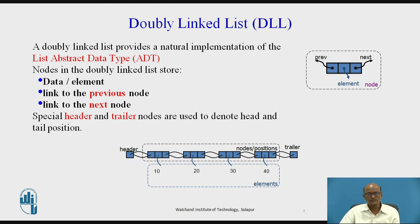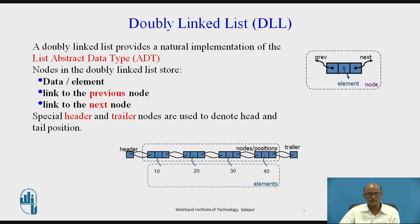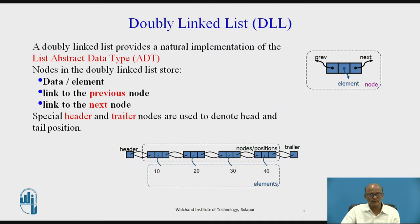A doubly linked list provides a natural implementation of the list abstract data type. Nodes in the doubly linked list store three parts. The first part is called the data or element. The second is called a link to the previous node, and the third is called a link to the next node. In the data element, whatever data we want to store — it may be integer, character, or any data type — can be stored in the data part. These two links are the link to the previous node and the link to the next node.